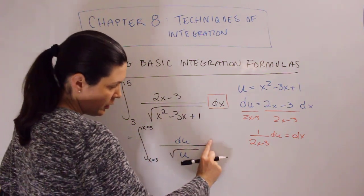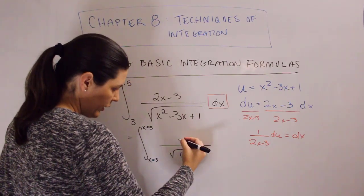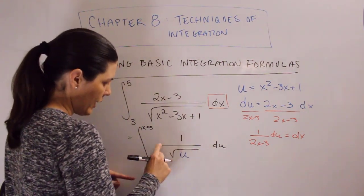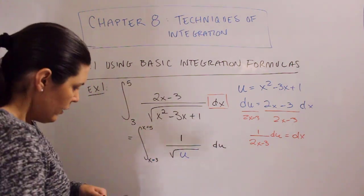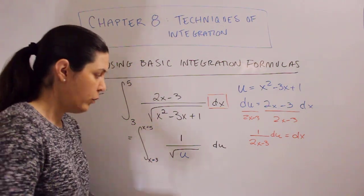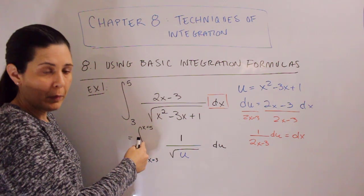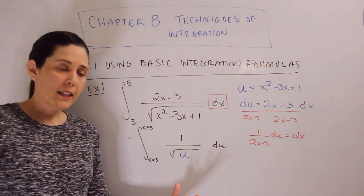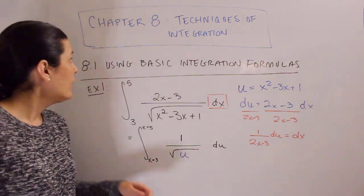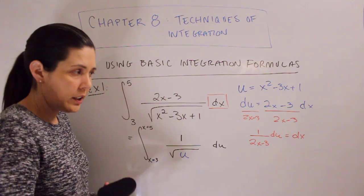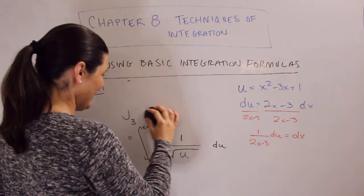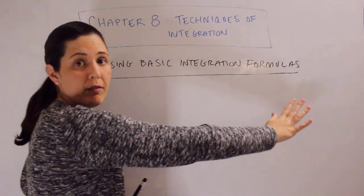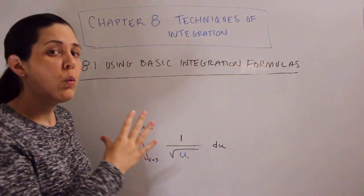Normally I'll just move the du to the back. Feel free to leave the du on top initially, but get in the habit of moving it back — this tells us we're integrating with respect to u. I put x equals 3 and x equals 5 to remind myself that when I'm ready to plug in values, these are not my u-numbers because I'm working with u. Now we are ready to use one of your integration rules — we're going to use the power rule. So let me rewrite my integrand.